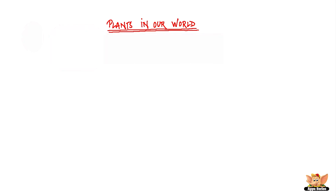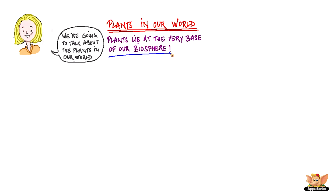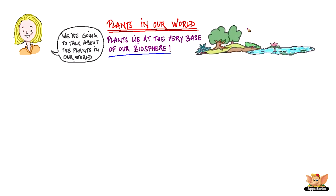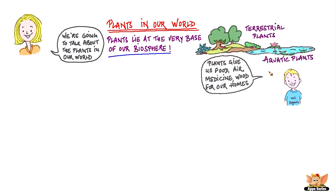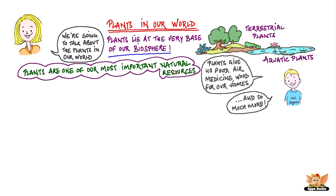Hello everybody, it's nice to be here with you again. In this video we are going to talk about the plants in our world. Plants lie at the very base of our biosphere. If you look around you will see trees, shrubs, herbs, grass, ferns, and algae everywhere. Most plants exist on land and are called terrestrial plants. We also have aquatic plants that grow in water. Plants give us food, medicine, air, wood for our homes, and so much more, making them one of our most important natural resources.